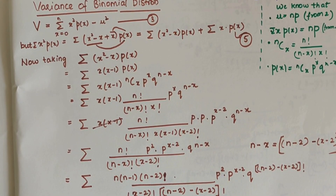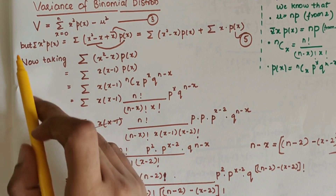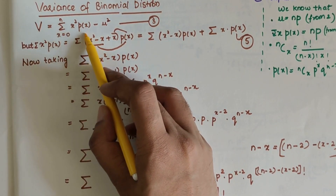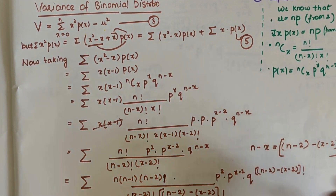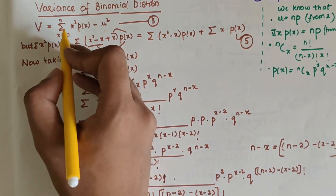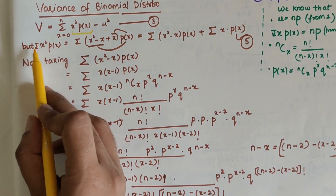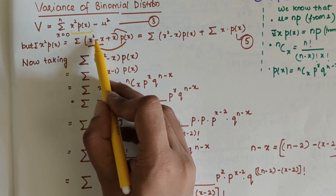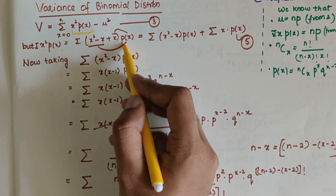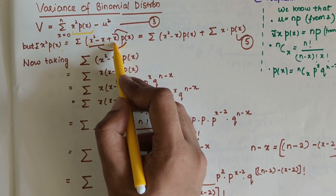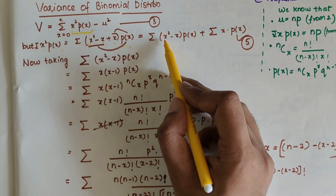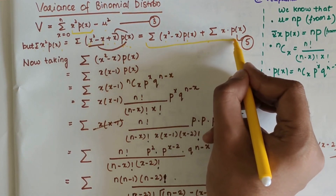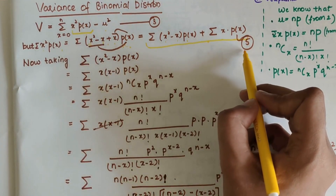Now let's derive the variance of binomial distribution. We know that variance V equals summation from X=0 to N of X² times P(X) minus mu squared. We split X² times P(X) by writing X² as (X²-X) + X, so it becomes X(X-1) times P(X) plus X times P(X). We take this expansion of X² P(X) as our working equation.